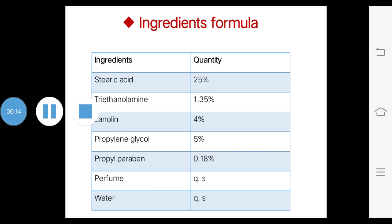Here I discuss how vanishing creams are prepared. For the preparation of vanishing cream, different ingredients are used: stearic acid, triethanolamine, lanolin, propylene glycol, propyl paraben, perfume, and water. The first ingredient is stearic acid — it is a major component of vanishing cream and is used to govern the consistency of the cream. Quantity: 25%.